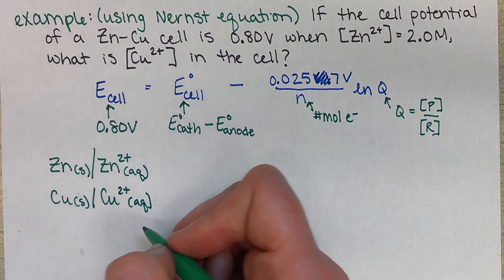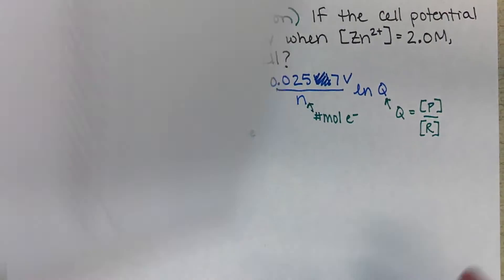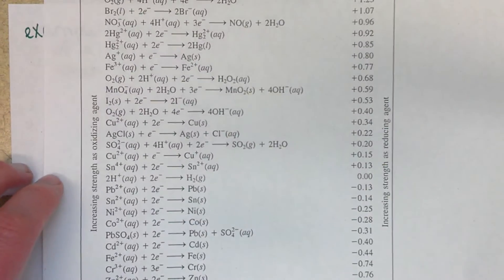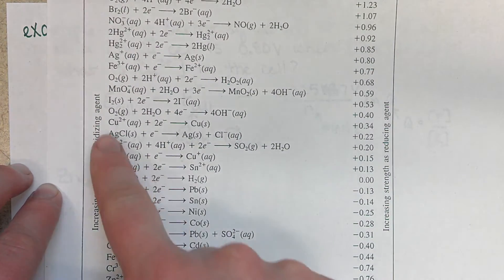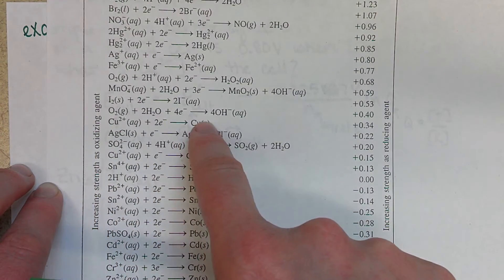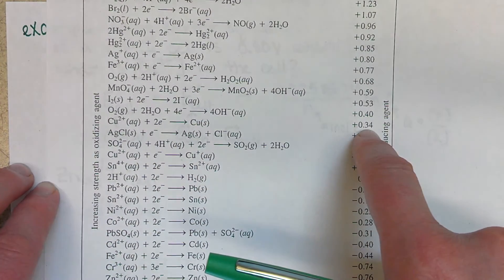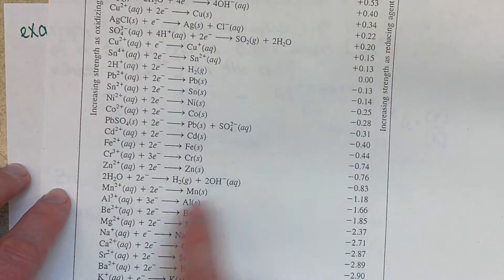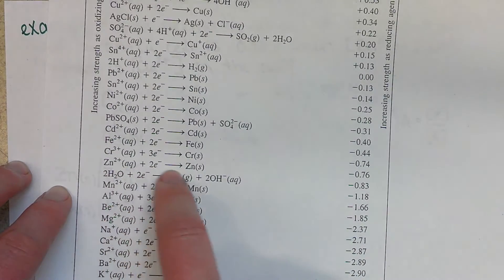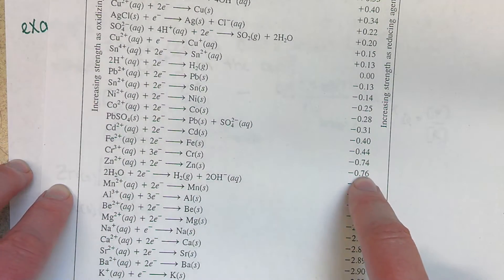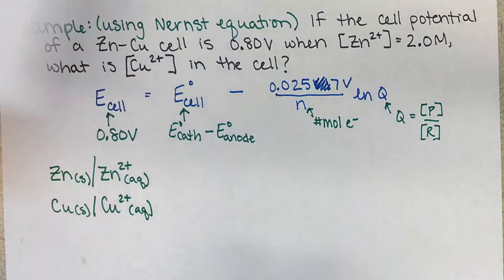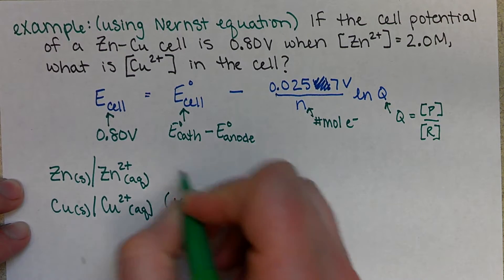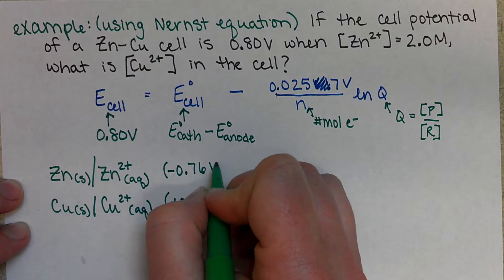So we want to look up our standard reduction potentials. So here's the table from your book. Somewhere around here you see copper 2 plus going to copper solid, so that will have a positive 0.34. Then we have zinc 2 plus and zinc solid, so we have zinc 2 plus, zinc solid. That's a negative 0.76. So positive 0.34 volts, negative 0.76 volts.